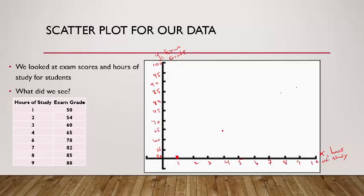It's not perfect since I did this by hand, but you get the idea. Looking at the scatter diagram, each point represents an ordered pair and the relationship looks almost like a straight line — a linear relationship. Since it's sloping upward, this is a positive linear relationship.